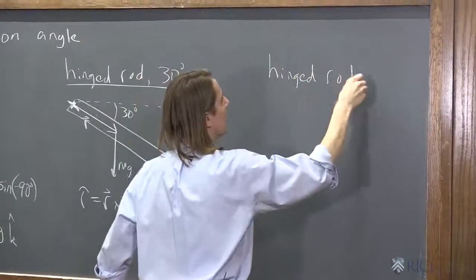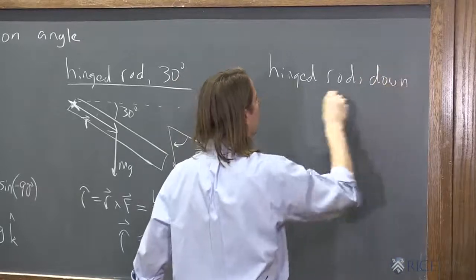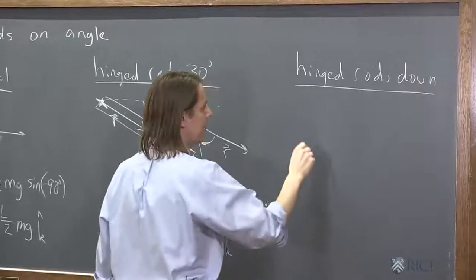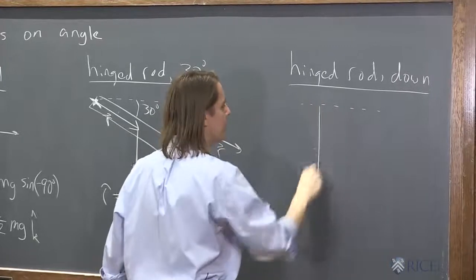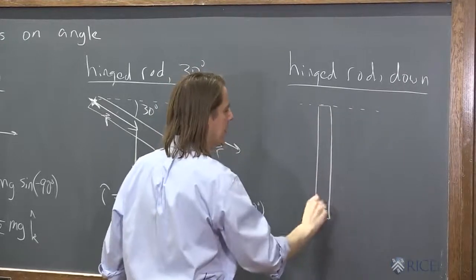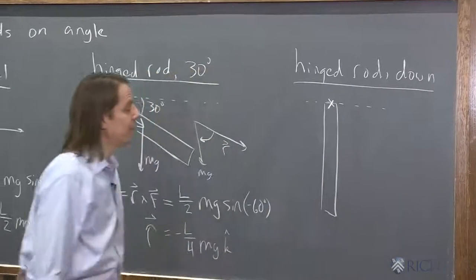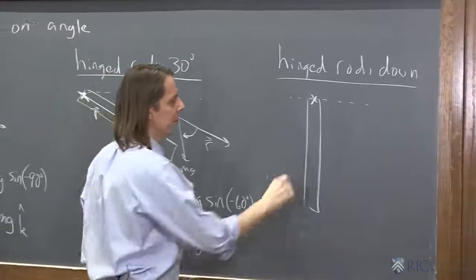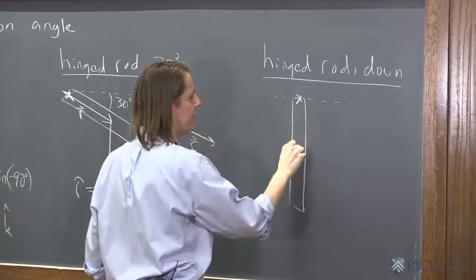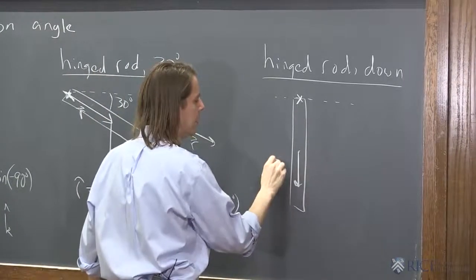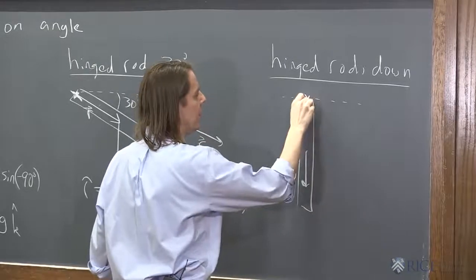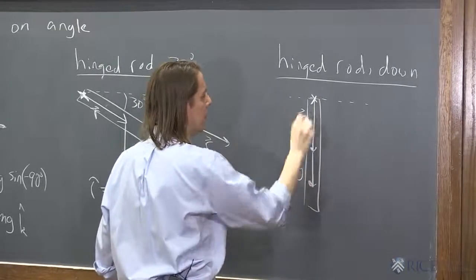Let's do one more. Hinged rod down. So this is the case. Here's your horizontal, but the poor rod is just hanging like that. Very sad. Free to rotate. Let's draw our vectors. So the force is applied here. Mg. The R vector is there, R.